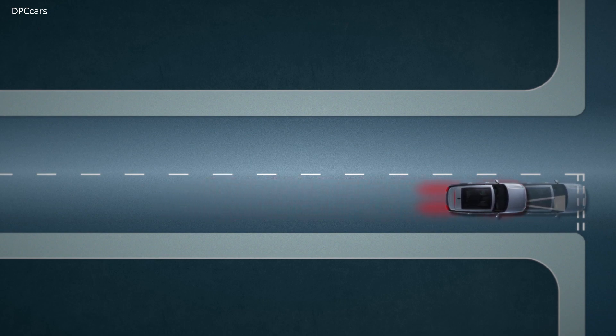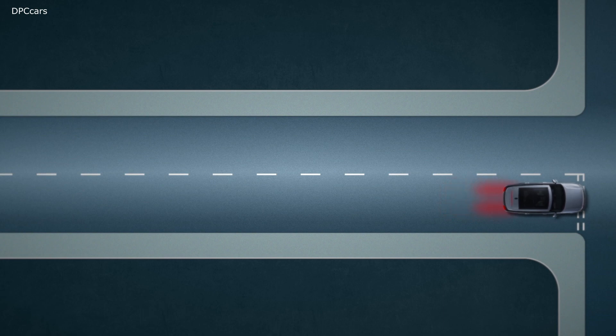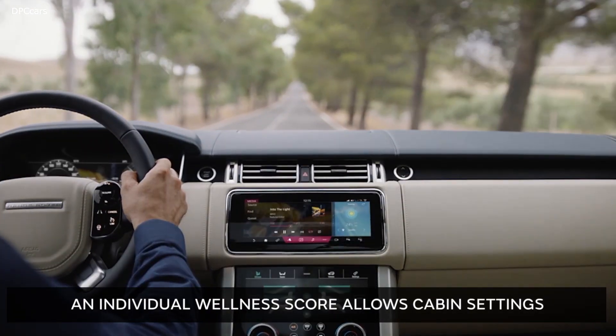Motion sickness, which affects more than 70% of people, is often caused when the eyes observe information different from that sensed by the inner ear, skin, or body, commonly when reading or on long journeys in a vehicle.